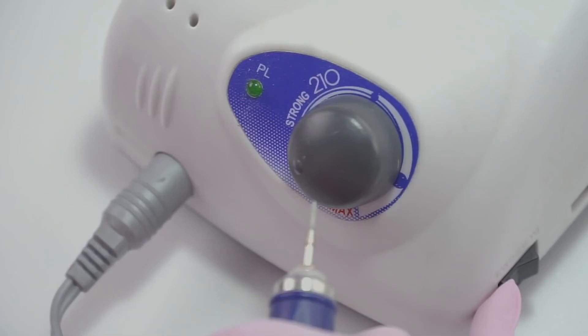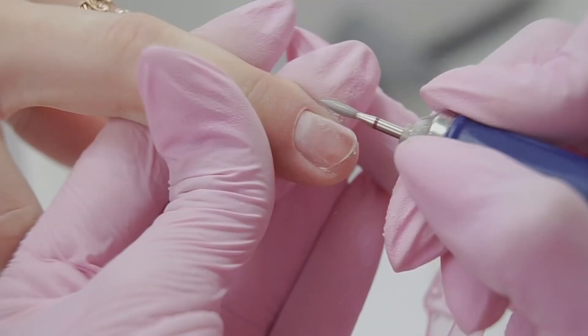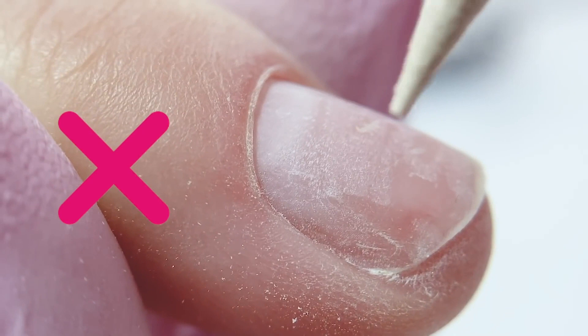I set a low speed of 5 to 7 thousand revolutions per minute, forward position, moving from right to left. It's crucially important not to press on the nail plate. Mat the nail plate so that there are no shiny areas left, especially on the sides, as it can cause liftings in those areas.